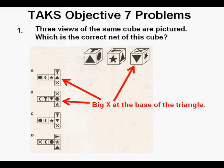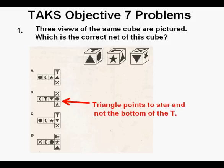And notice that the net in answer B when folded into a cube will also have the X at the base of the triangle. However, in answer B the triangle points to the star and not the bottom of the T as in the first two views of the cube shown. So we can cross off answer B. And this confirms A is our correct answer.